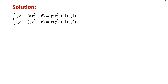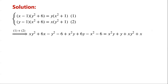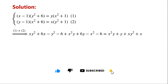Now expand the two equations and then add equation 2 to equation 1. We have: XY² + 6X − Y² − 6 + X²Y + 6Y − X² − 6 = X²Y + Y + XY² + X. The XY² terms on the left-hand side and right-hand side cancel.